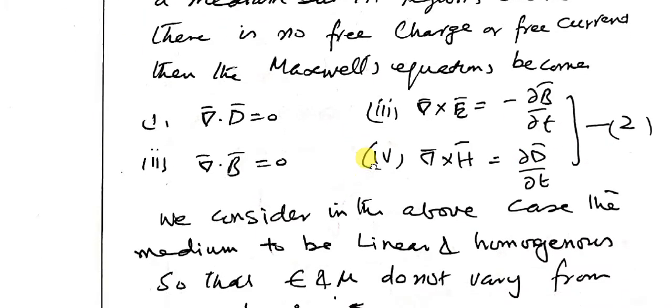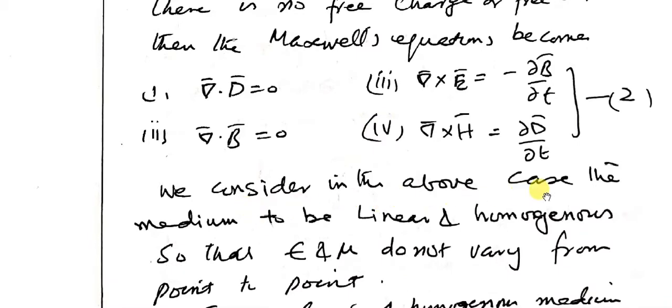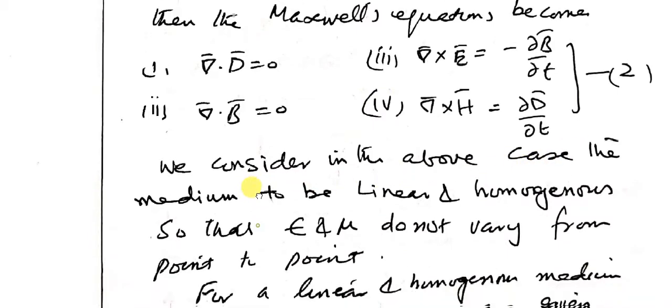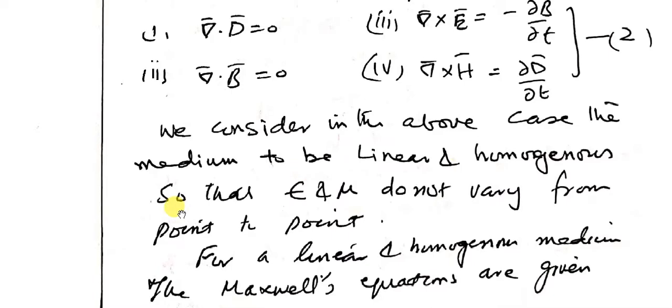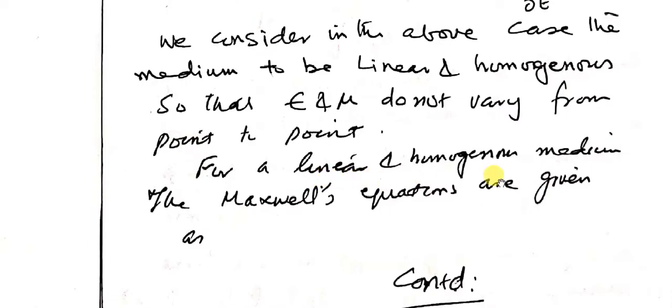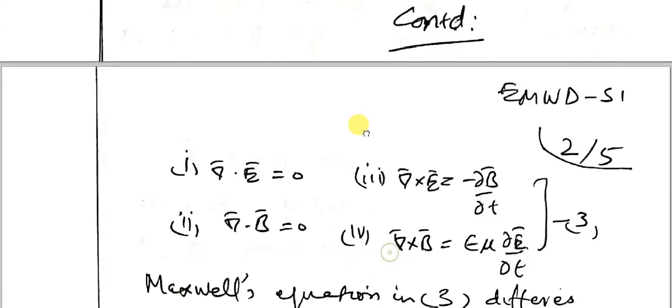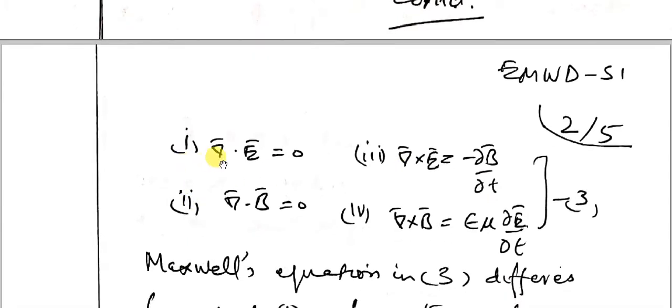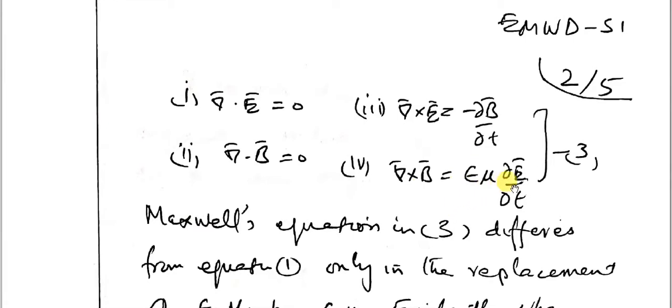We consider the medium to be linear and homogeneous so that epsilon and mu do not vary from point to point. For linear and homogeneous medium, the Maxwell equations are: divergence of E equals zero, curl of E equals minus delta B by delta t, divergence of B equals zero, and curl of B equals epsilon mu delta E by delta t.